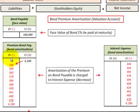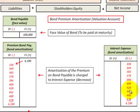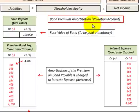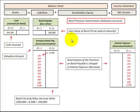We need an associated credit entry for the debit we made to the bond premium, and what we do is credit the interest expense account on the income statement. We credit it by the amount of the bond premium amortized each period until we've worked through the full $4,100 — that reduces interest expense. A credit reduces interest expense, and remember interest expense is part of net income, which closes out to retained earnings, so reducing interest expense effectively increases retained earnings.